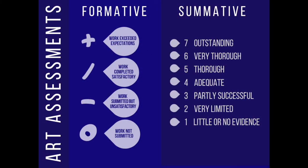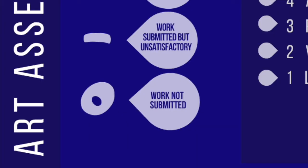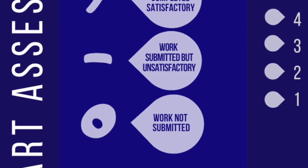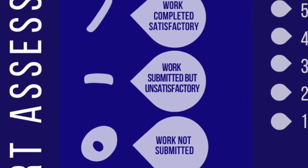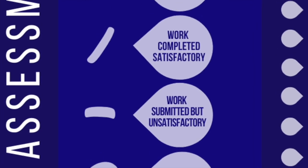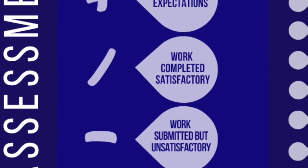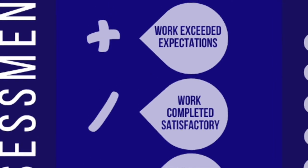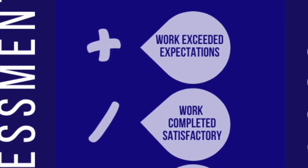Summative assessments are our larger art-making projects and they will be graded on a one to seven scale. Formative assessments — like your sketchbook work and some research and reflections — will be assessed using symbols. What you're really aiming for is the slash symbol, which means you completed up to expectations. Anything above and beyond would be a plus.